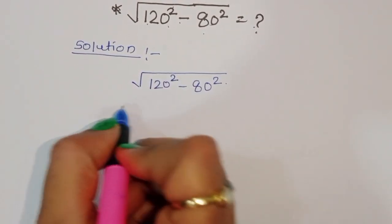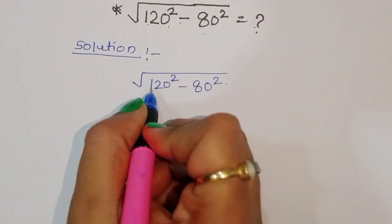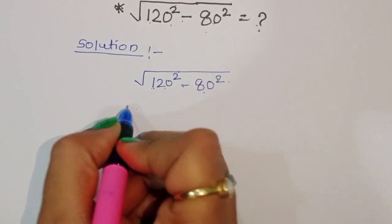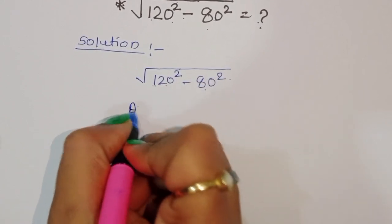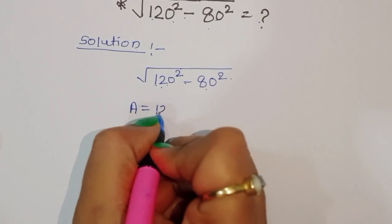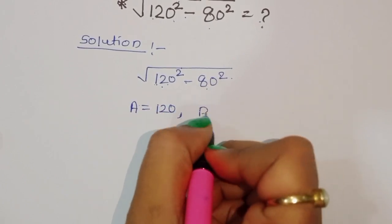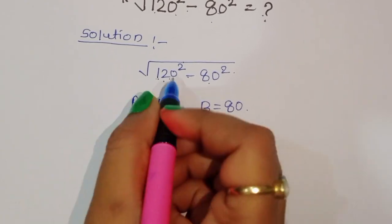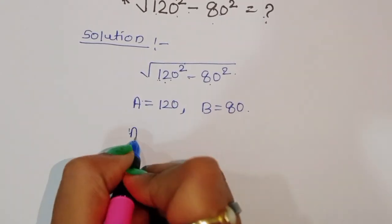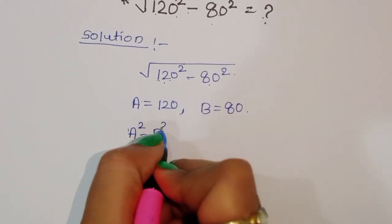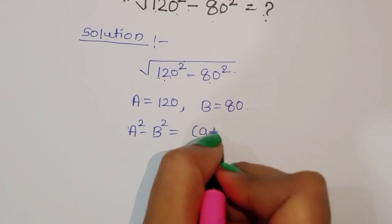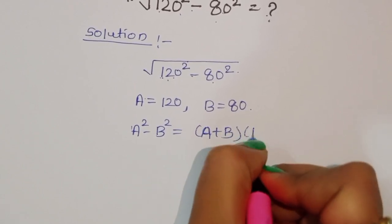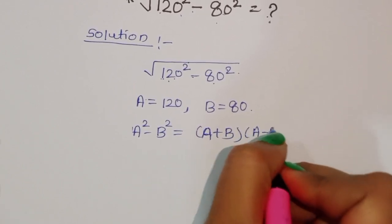You can see here, if we consider A squared minus B squared, then here A is equal to 120 and B is equal to 80. Now, A squared minus B squared — we know the formula.